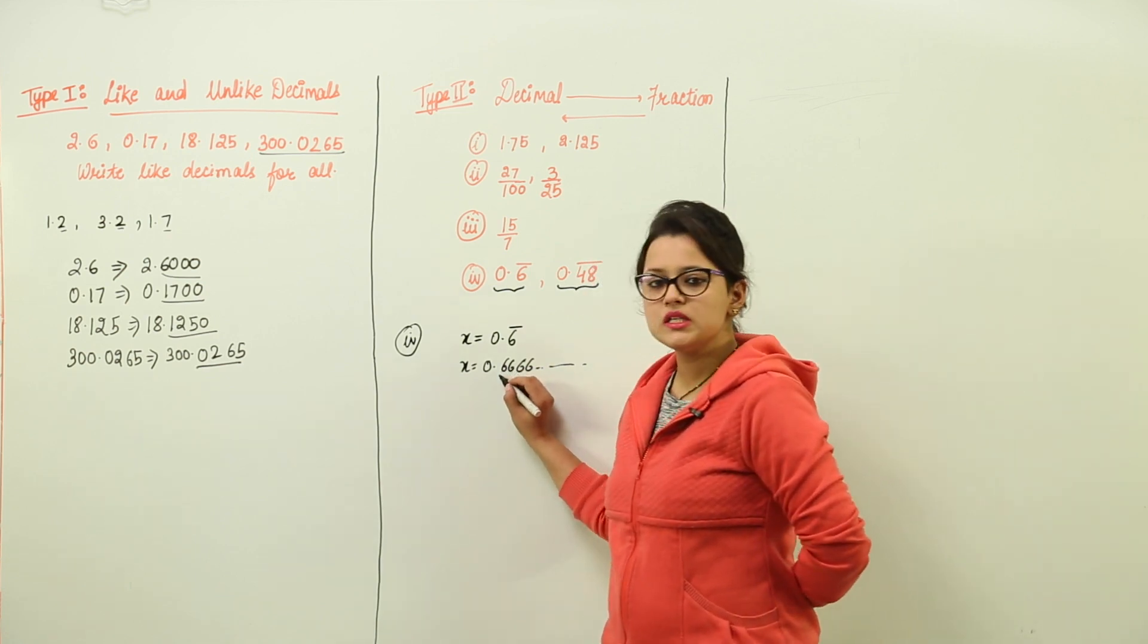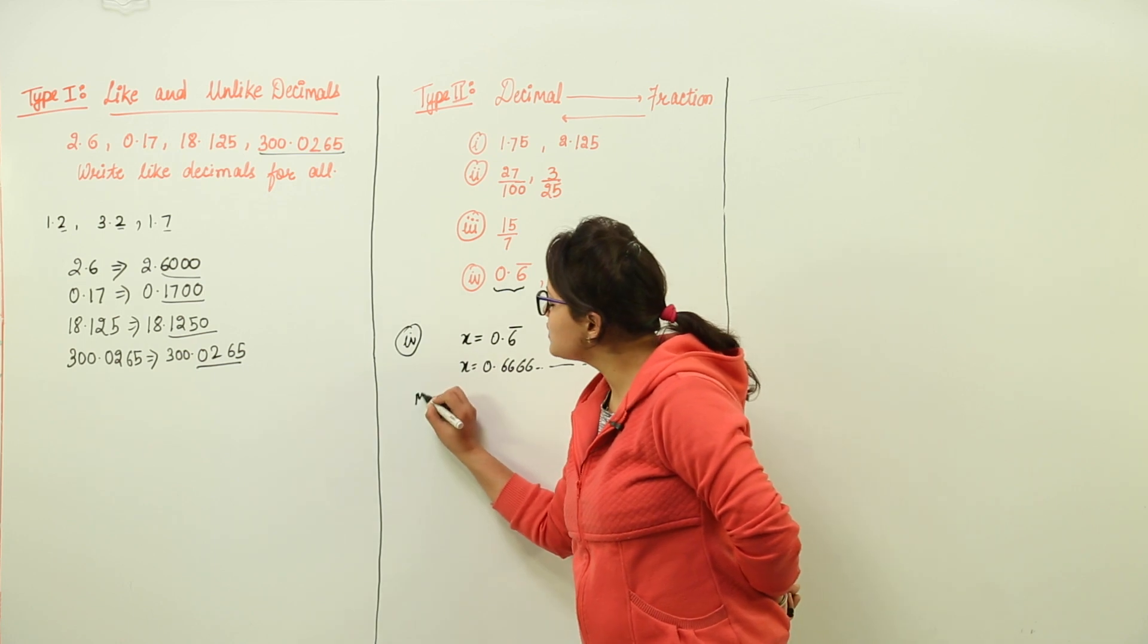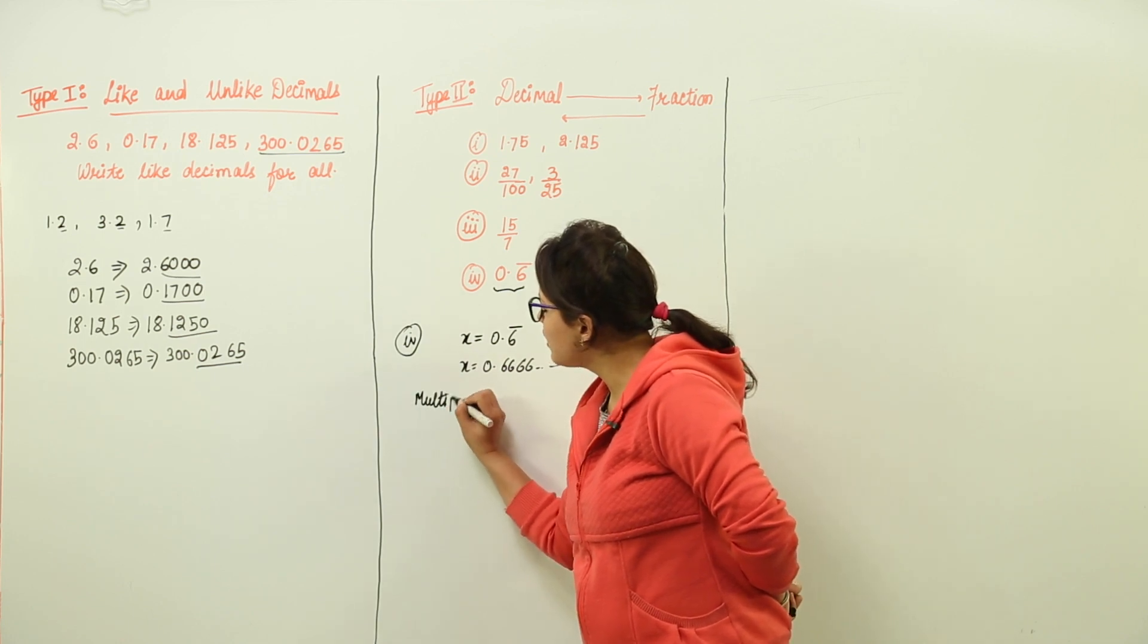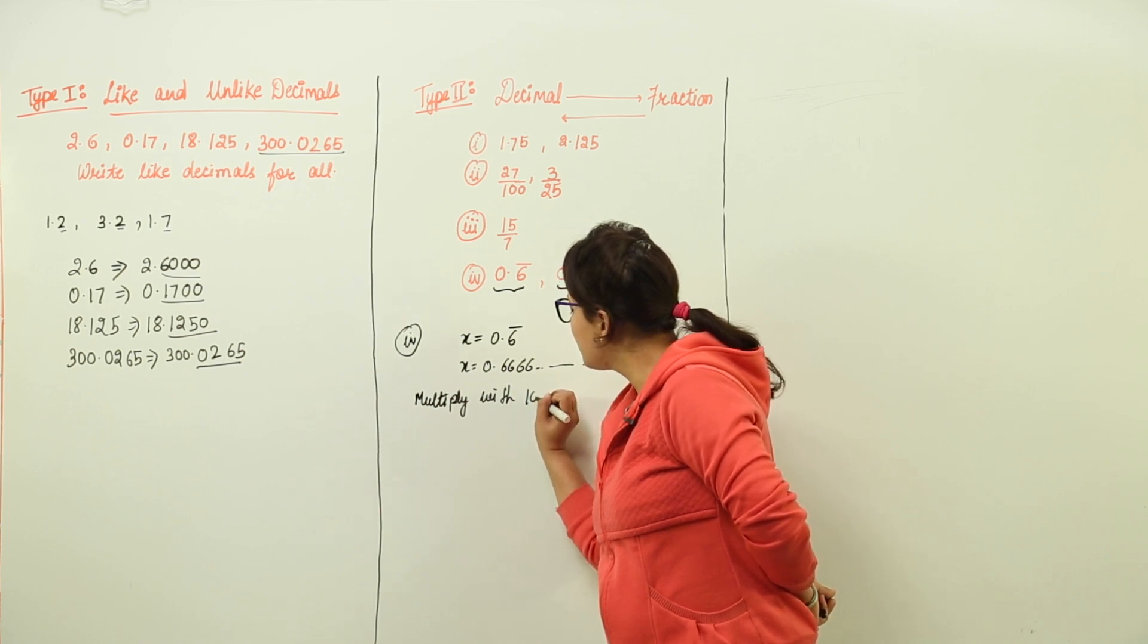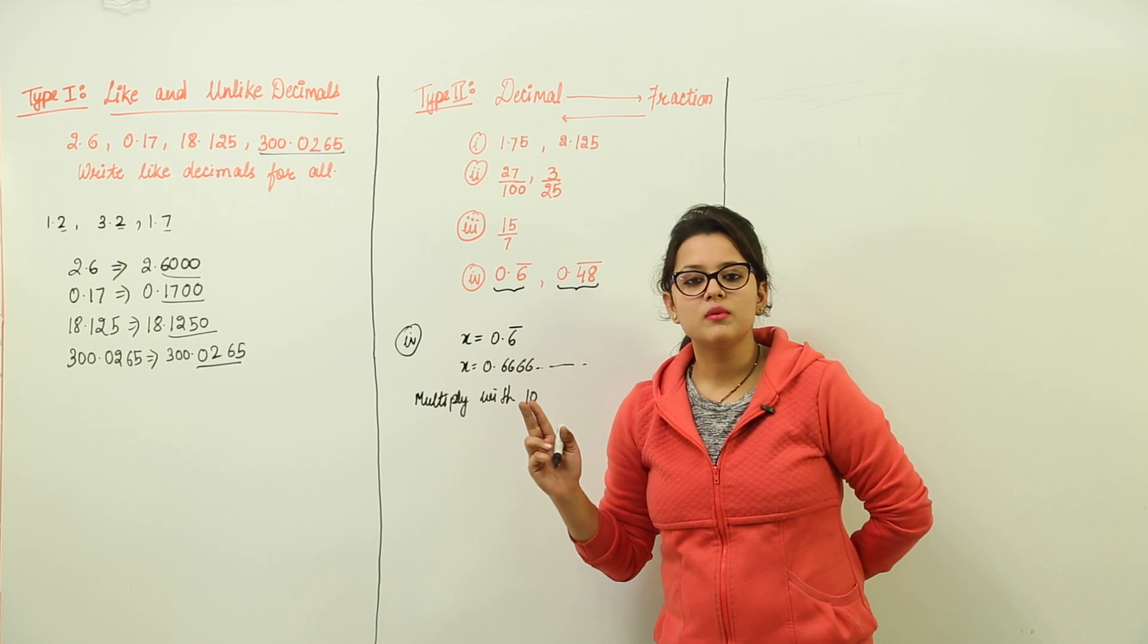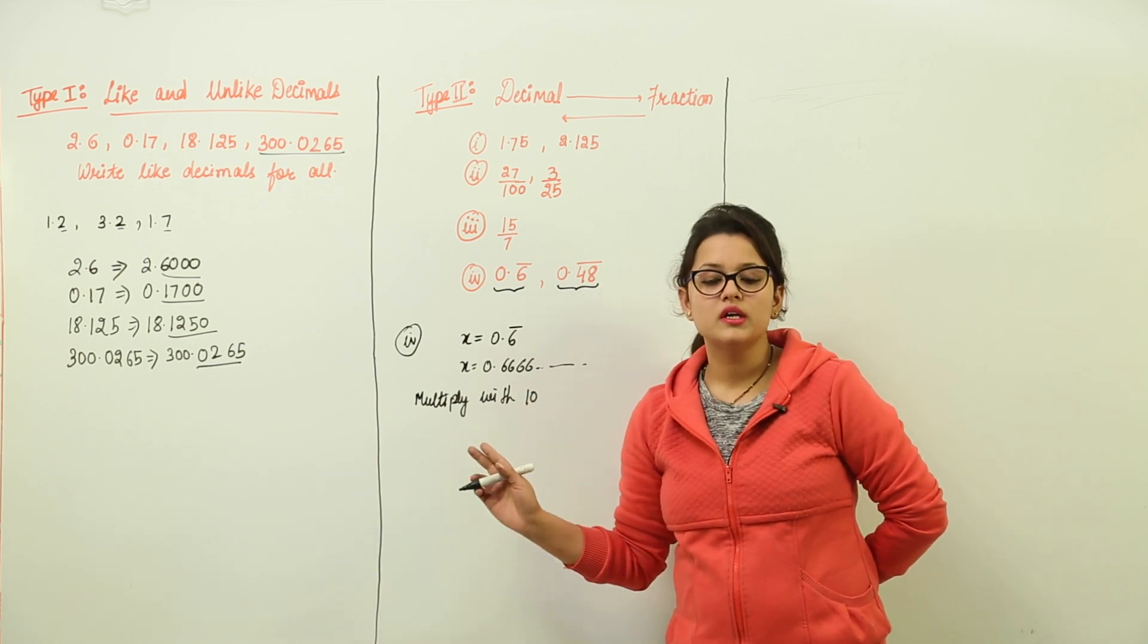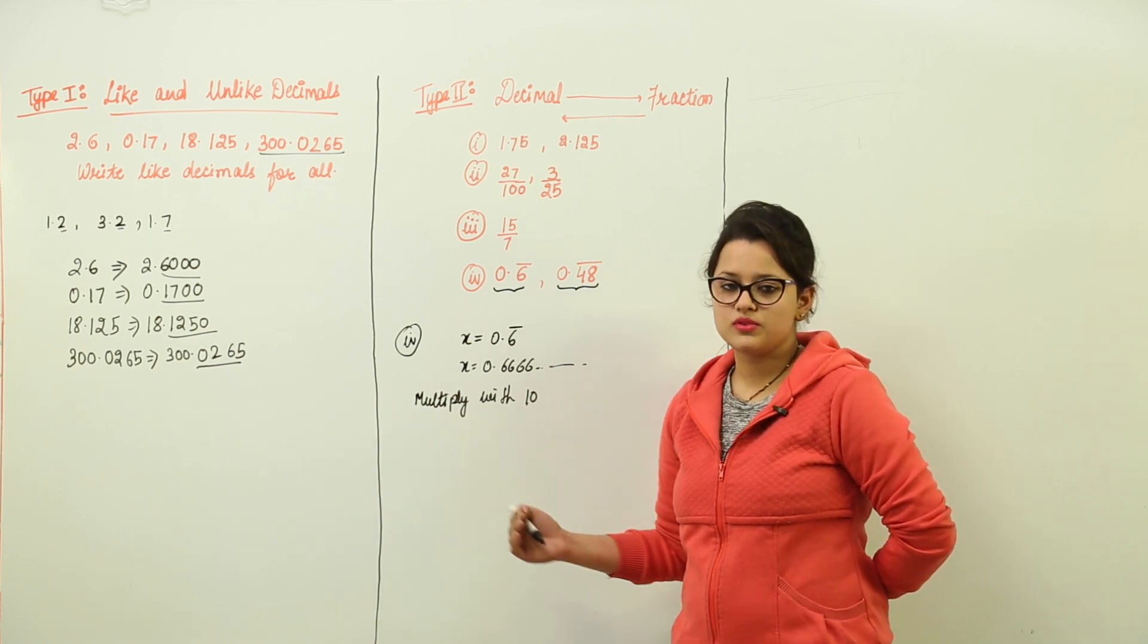Now how many digits were repeating? 1. So we multiply both the sides with 10. Why 10? Because only 1 digit was repeating. If 2 digits are repeating, we multiply both the sides with 100. If 3 digits are repeating, we multiply both the sides with 1000. And so on.